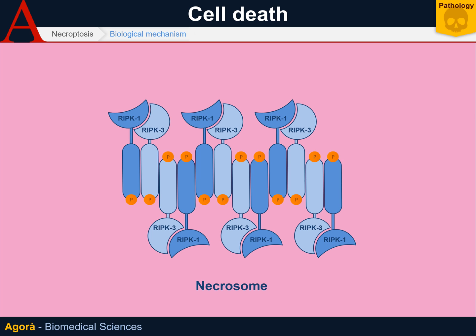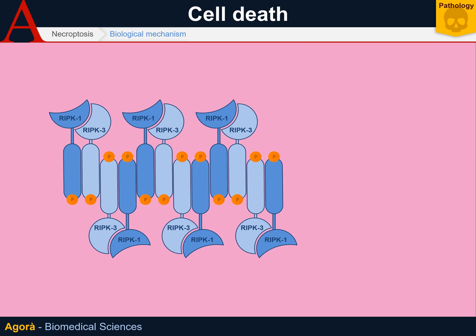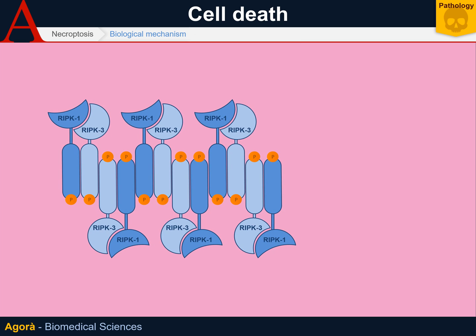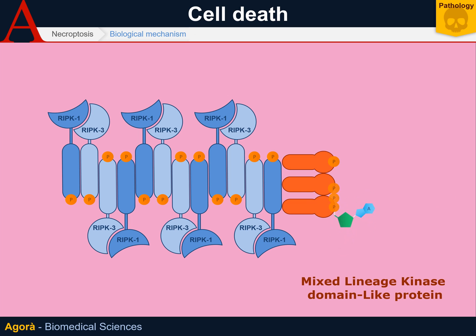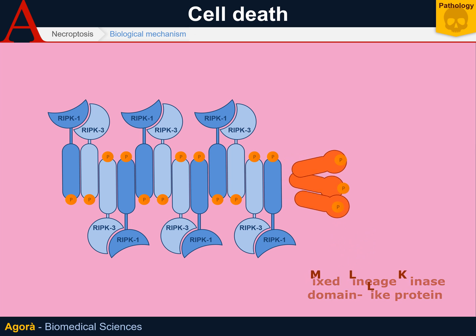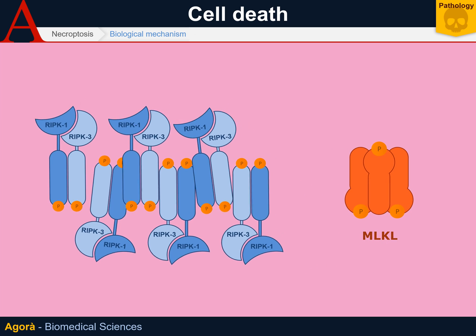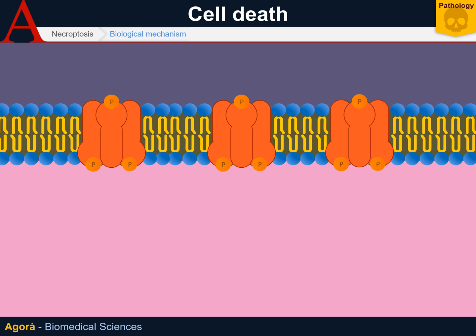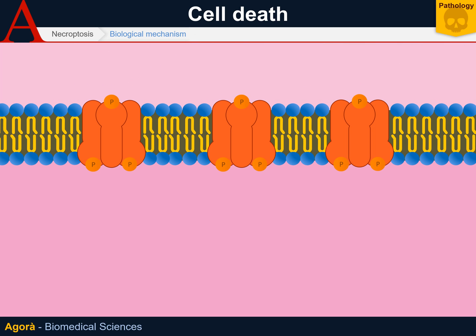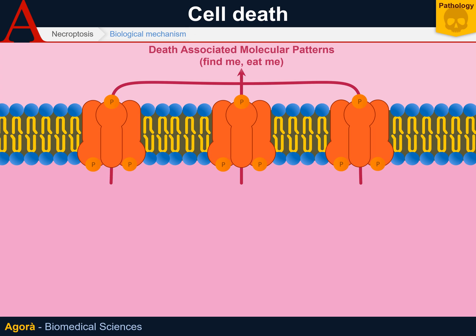More RIPK1 and RIPK3 dimers get together, forming a beta-pleated sheet structure called the necrosome. The necrosome functions like a kinase and not like a caspase — it does not work by cleavage but by phosphorylation. One of its effects is the phosphorylation of the mixed lineage kinase domain-like protein (MLKL). The phosphorylated MLKL molecules form trimers, which insert into the cell membrane and form pores.